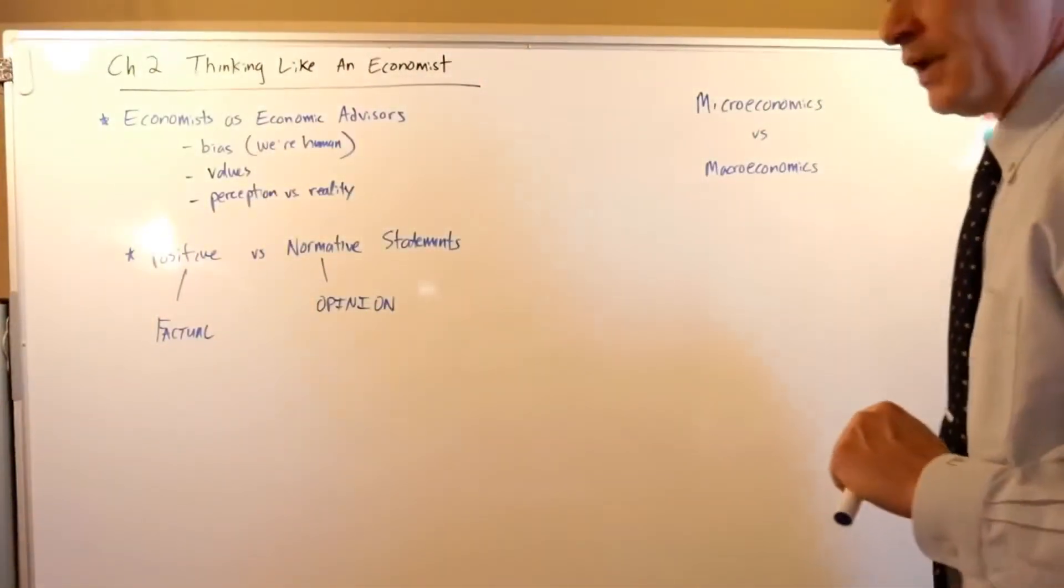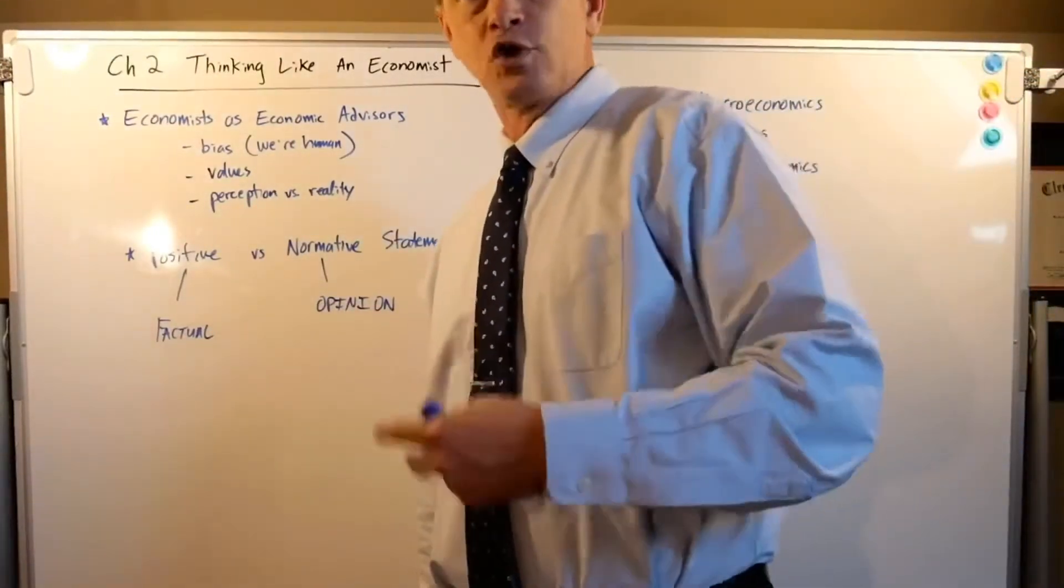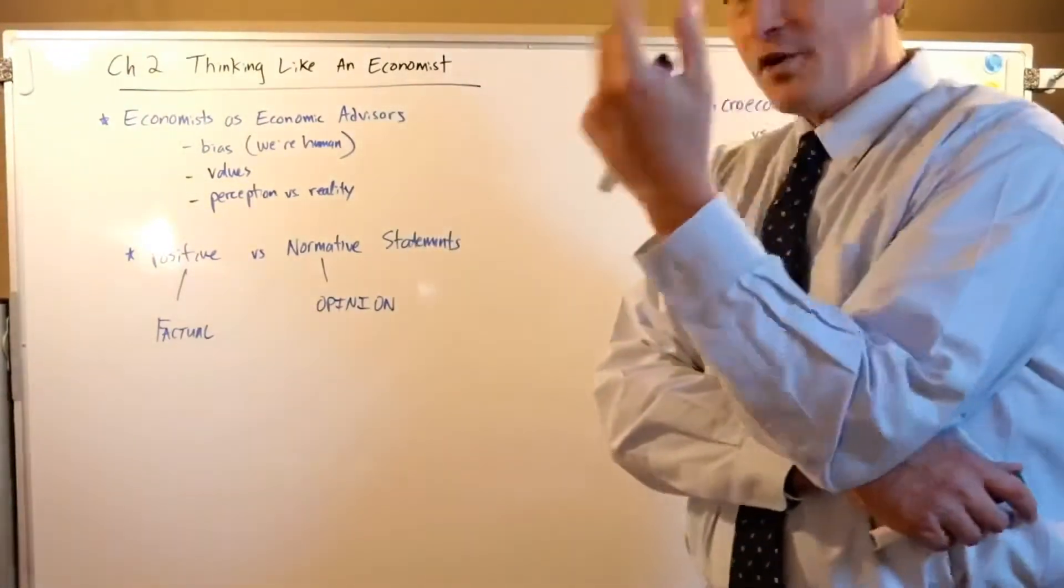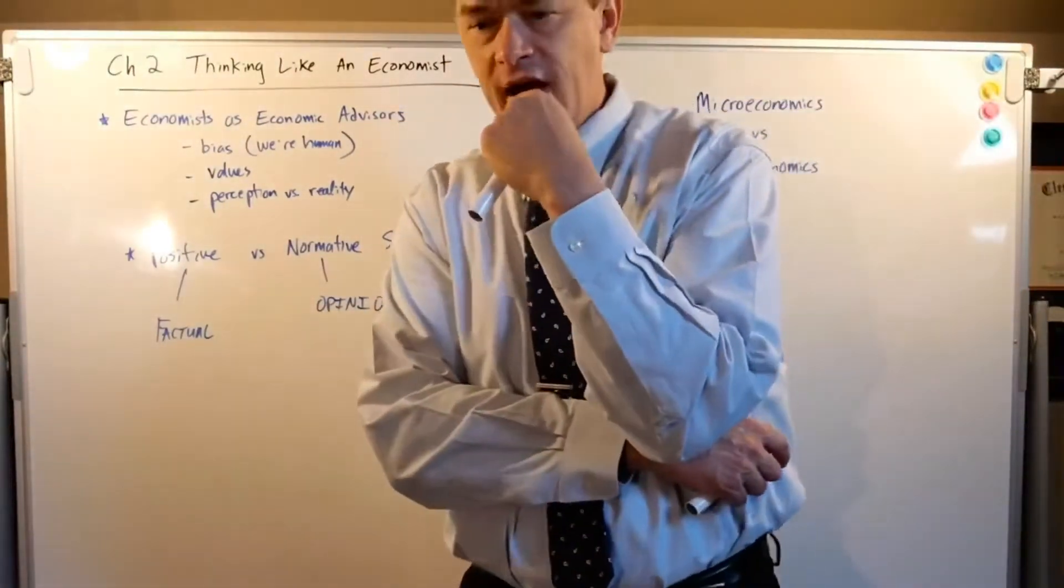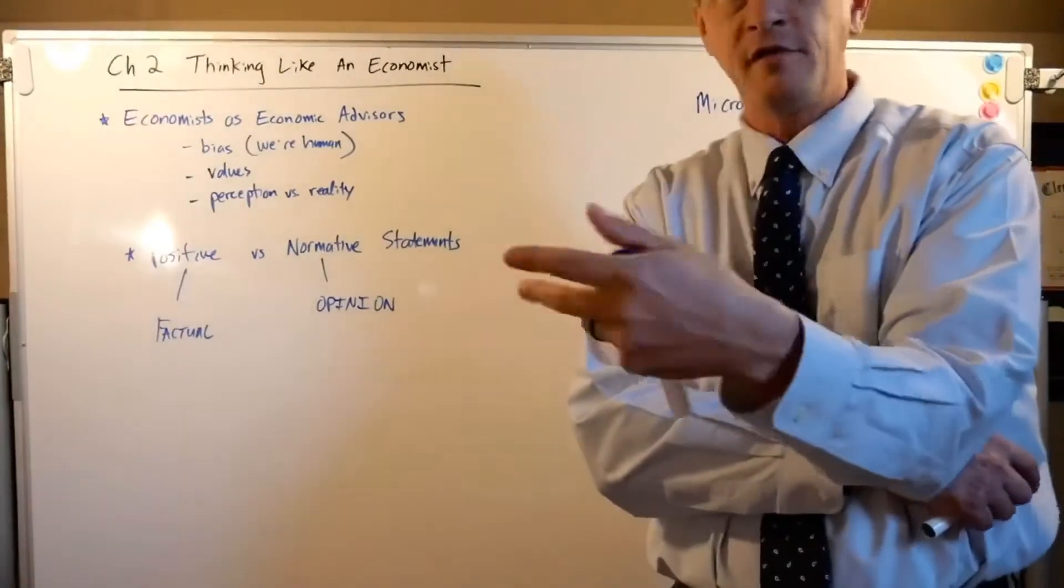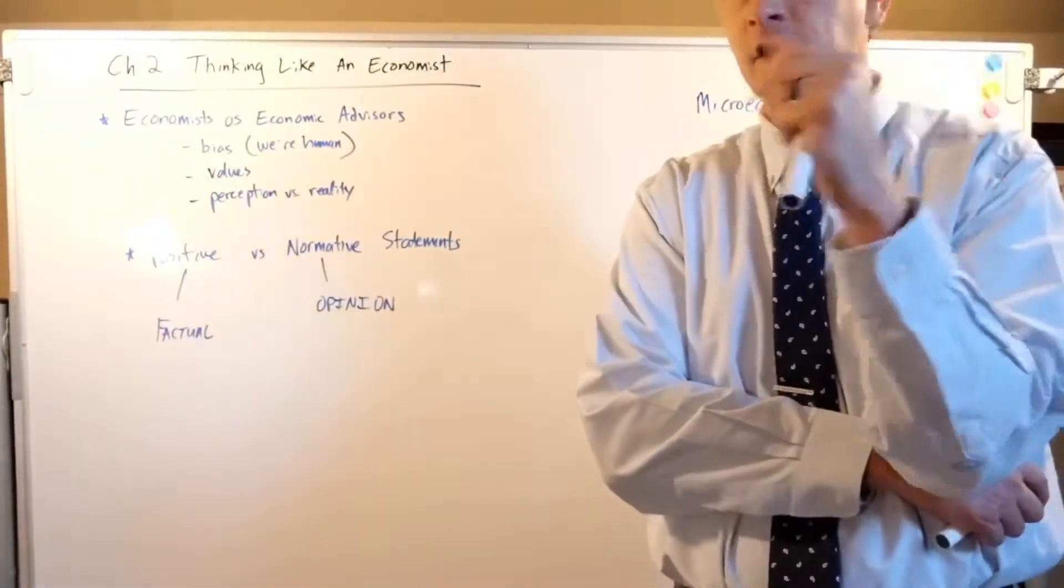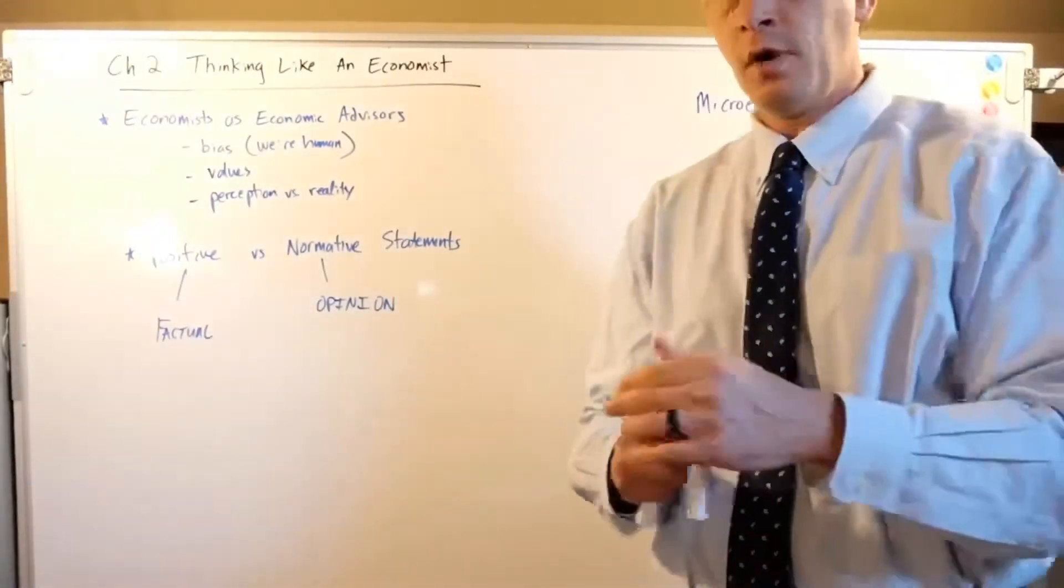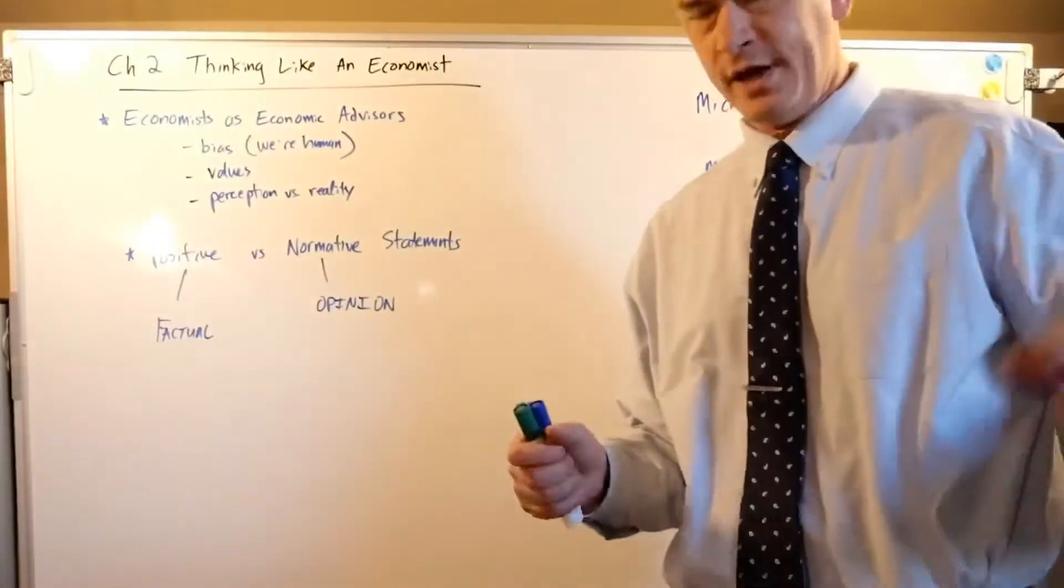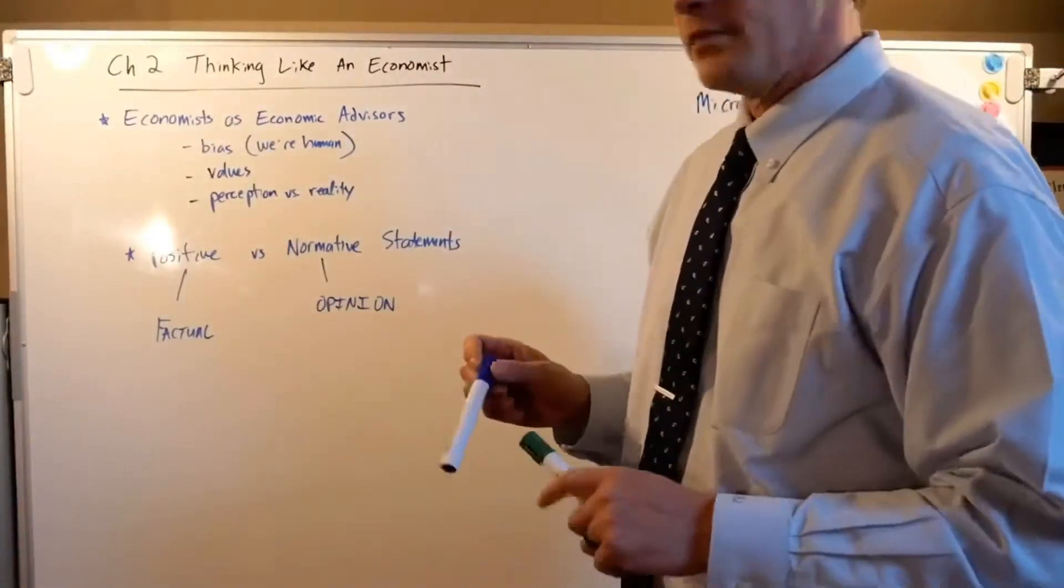Okay, economists as economic advisors are quite useful because they can make social predictions about what on average is going to happen. Harry Truman once said he was looking for a one-armed economist. Someone asked him why, and he said, 'Well, every economist I talk to as an advisor typically says, on the one hand you have this, but on the other hand you have that.' So he was looking for one with just one hand. Funny man, that Harry Truman.